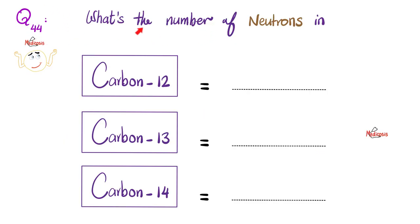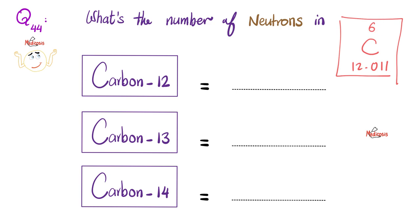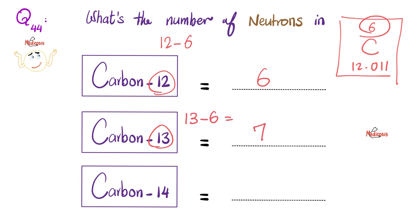Now we're ready to answer the question from the last video. What's the number of neutrons in carbon-12, carbon-13, and carbon-14? Looking at the periodic table, carbon is number 6, with an atomic mass of 12.011. So for carbon-12: 12 minus 6 equals 6 neutrons. For carbon-13: 13 minus 6 equals 7 neutrons. For carbon-14: 14 minus 6 equals 8 neutrons. Because: number of neutrons plus number of protons equals the mass number.